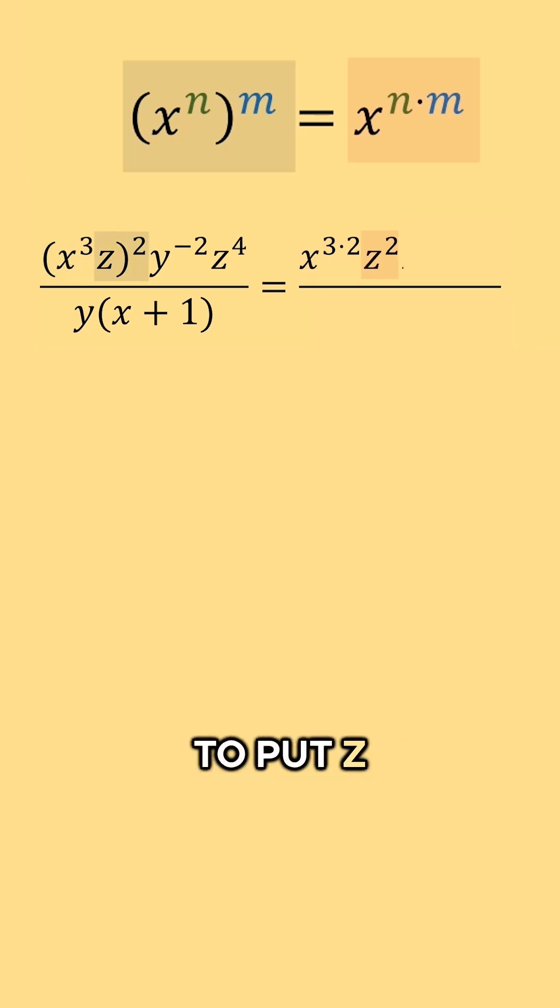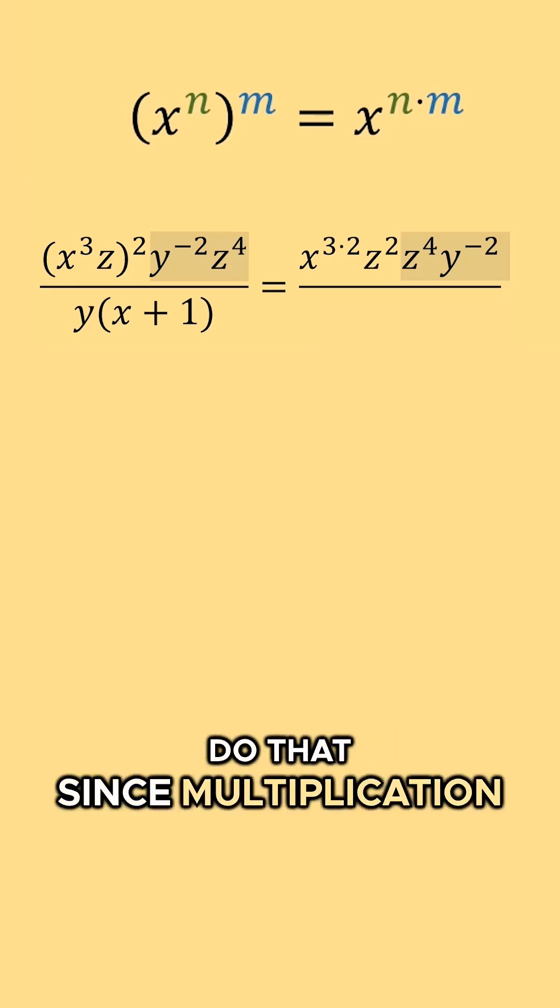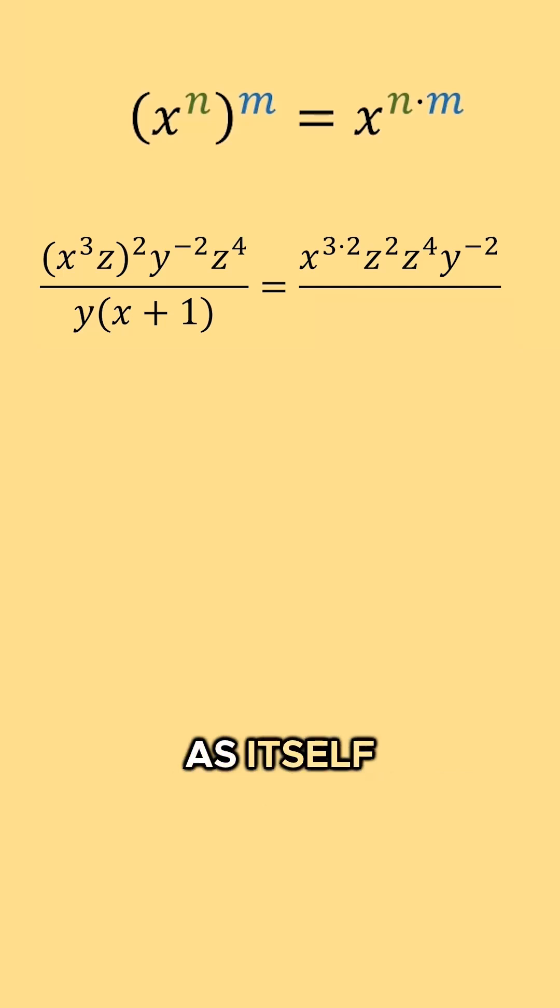And I'm going to put z to the fourth next to z to the second power so that all of my variables are all side by side. In other words, I just switched it with the position of y to the negative two, and we can do that since multiplication is commutative. And we'll bring the denominator over as itself.